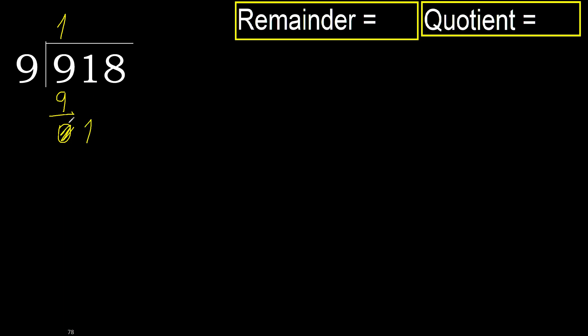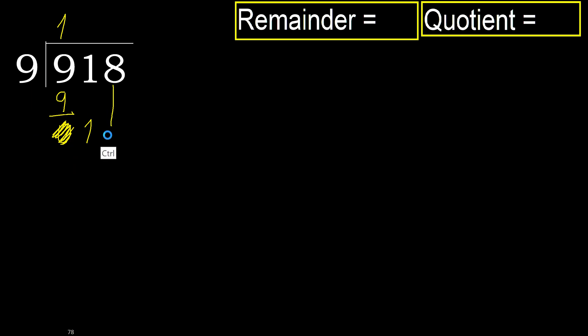Next. Bring down: eliminate 0. Next digit is 1. 1 is less, therefore move to the next digit.